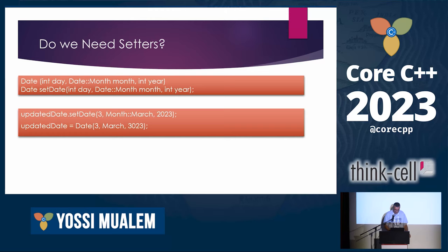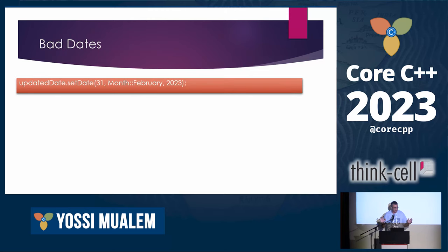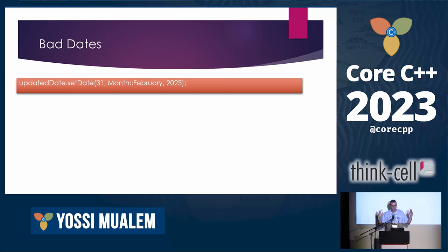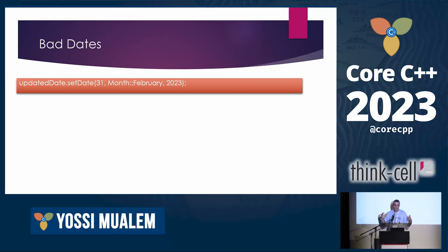The last thing I want to talk about is how to handle bad dates. Here I'm trying to assign a bad date, so we want to reject it without touching the object. We don't want to start modifying it, discover midway it's wrong, and leave it half modified — we don't want our object in a consistent but unspecified state. We want to reject it immediately and obviously report the error. How we report the error depends on the error-reporting mechanism — that's way too big a topic for now; it deserves at least an hour-long talk by itself.